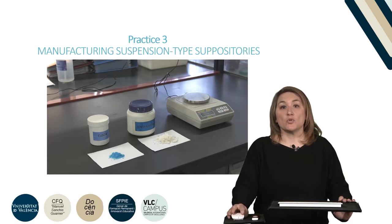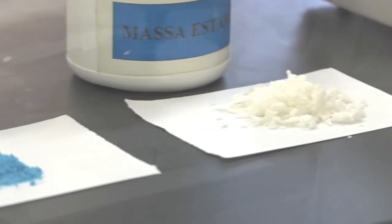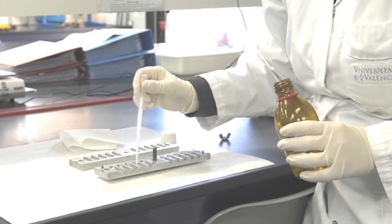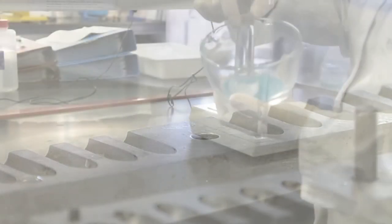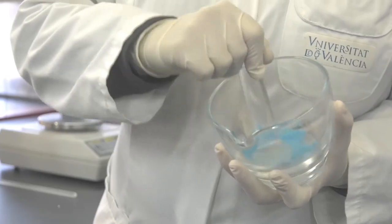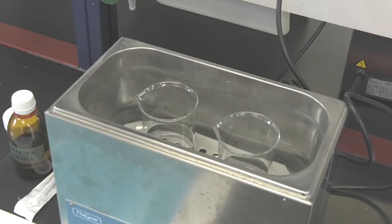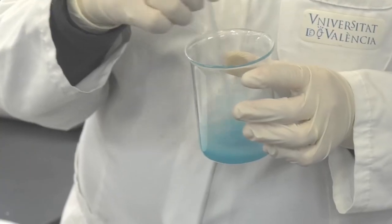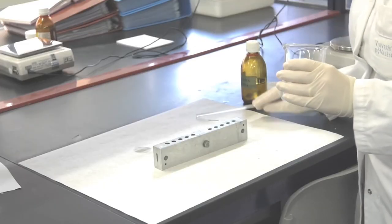The following video shows the elaboration of the suspension type suppositories. The first step in the preparation of suppositories is the weighing of the components. We can also lubricate and prepare the mold for later use. Next, the active ingredient is pulverized into the mortar. This is a very important step since in this way particle size is reduced and the sedimentation rate when introduced in the alveoli will be also reduced. Next, the excipient is melted in the bath. Then we add the active ingredient stirring while the temperature is decreasing.